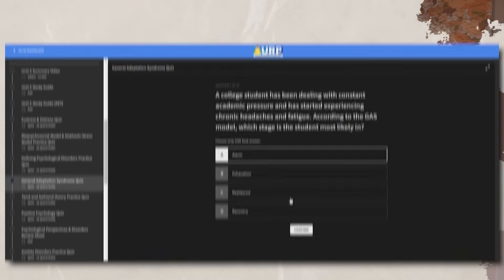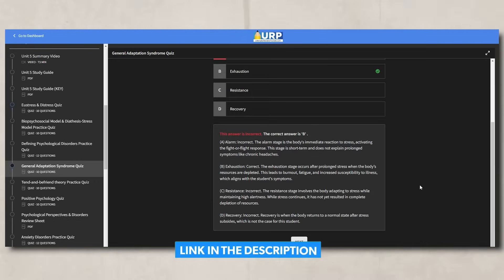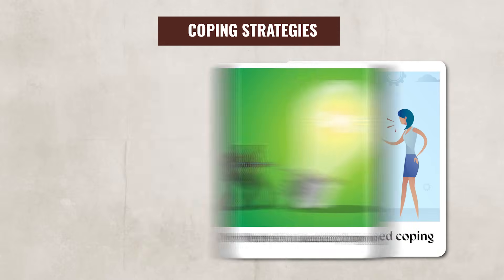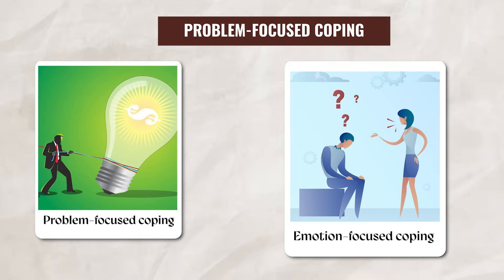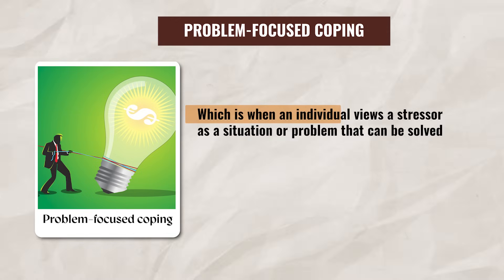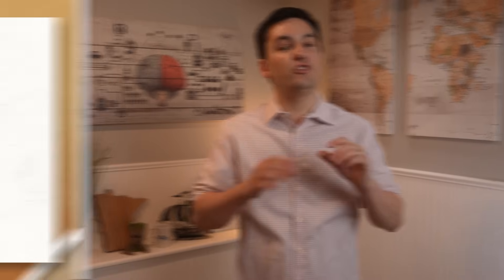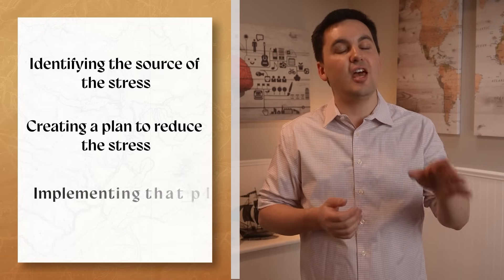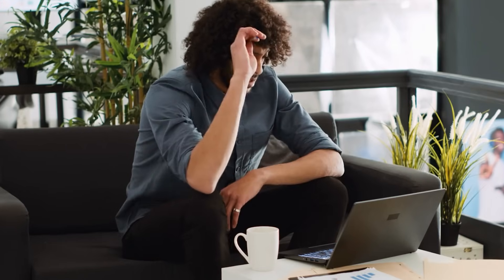Make sure you go take the practice quiz I created on both theories in my Ultimate Review Packet. Remember, if you want to truly succeed in AP Psychology, you need to be active in your learning, not passive. Now, we've talked about different types of stress and stressors, but we still need to talk about different coping strategies. There are two coping strategies you want to be familiar with. The first is Problem-Focused Coping, which is when an individual views a stressor as a situation or problem that can be solved. This approach involves identifying the source of the stress, creating a plan to reduce it, and then implementing that plan. If the original plan does not work, the individual will look for another solution and repeat the process.